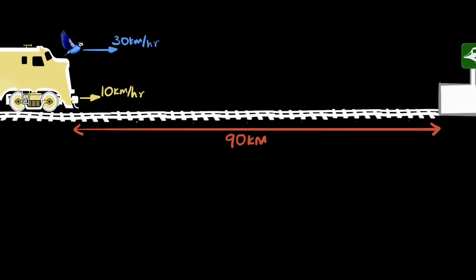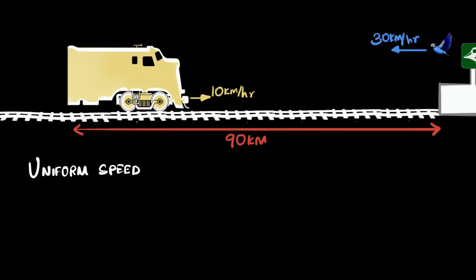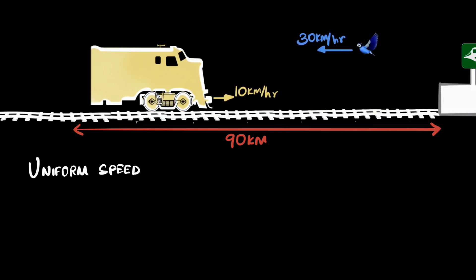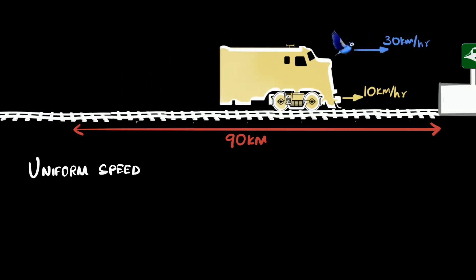The first thing I noticed is that both the train and the bird are traveling at uniform speeds. Remember, even though the bird is changing its direction, in the problem it's stated that it does it instantly. So the bird is always traveling at 30 kilometers per hour. The train is always traveling at 10 kilometers per hour.